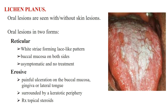Lichen planus presents with oral lesions with or without skin lesions. Skin lesions are pruritic, purple, polygonal papules seen on the forearm and medial side of the thigh. Oral lesions occur in two forms: the reticular form and the erosive form. The reticular form consists of white striae forming a lace-like pattern on the buccal mucosa bilaterally; these are asymptomatic and require no treatment. The erosive form is characterized by painful ulceration on the buccal mucosa, gingiva, or lateral tongue, with each ulcer surrounded by a keratotic periphery. Treatment consists of topical steroids.